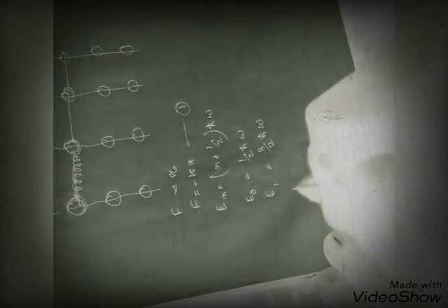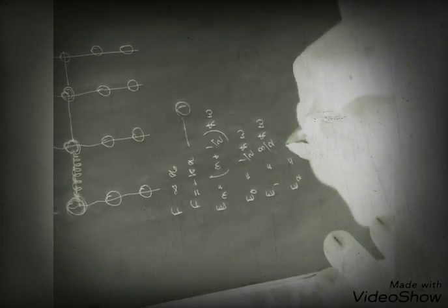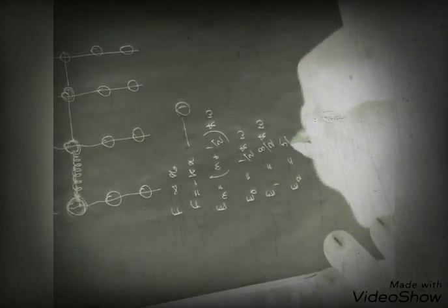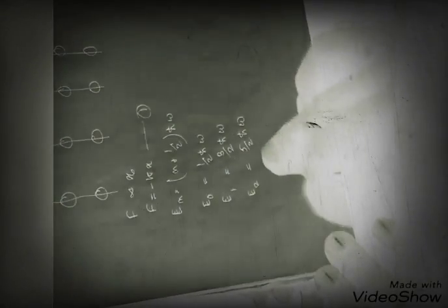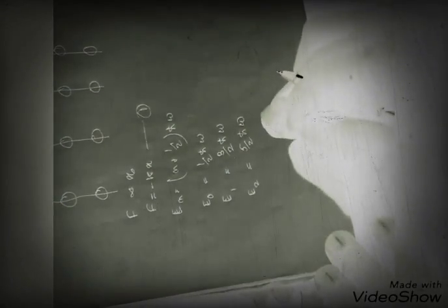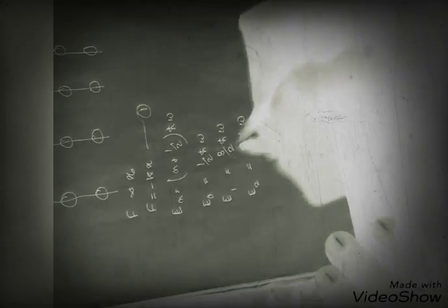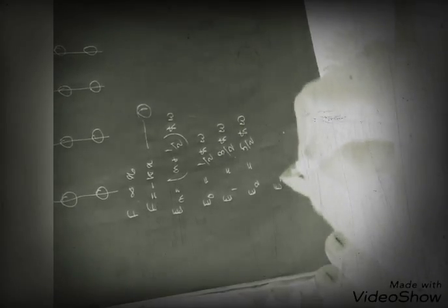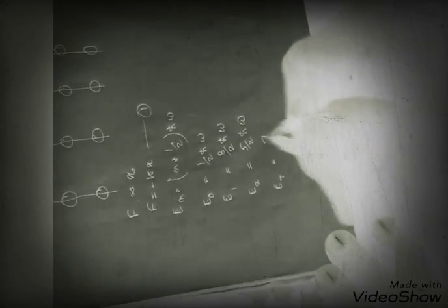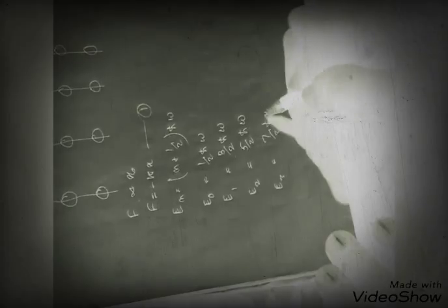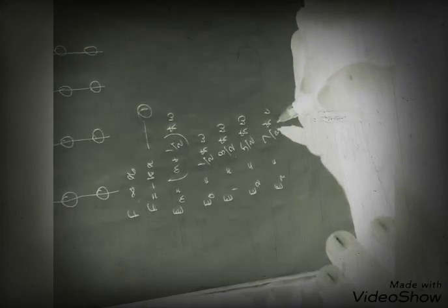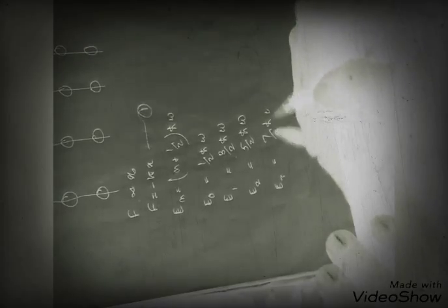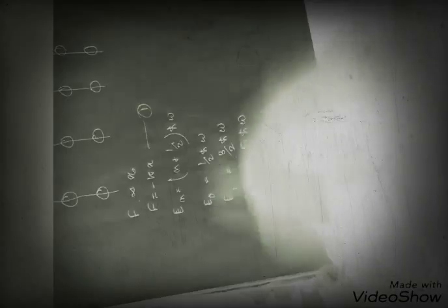We can see that energy is equal to half ħ squared omega for simple harmonic motion. This is working on quantum physics, applying the quantum treatment to a simple harmonic motion.